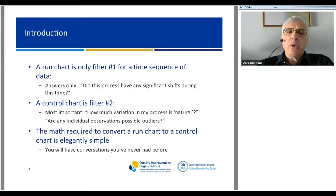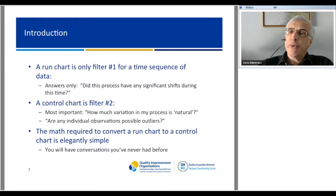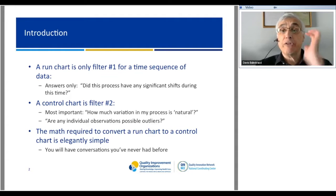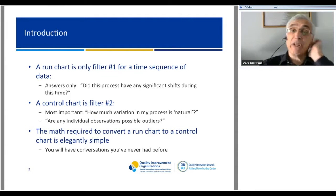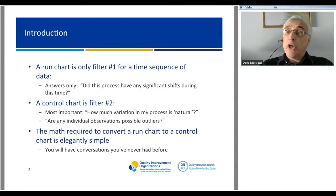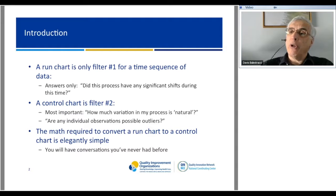Last lesson was about run charts, and I call that filter number one for a time sequence of data. All it answers is: did this process have any significant shifts during this time? But the control chart now becomes filter number two, once we determine whether we have boiling water, ice water, and take the correct averages.